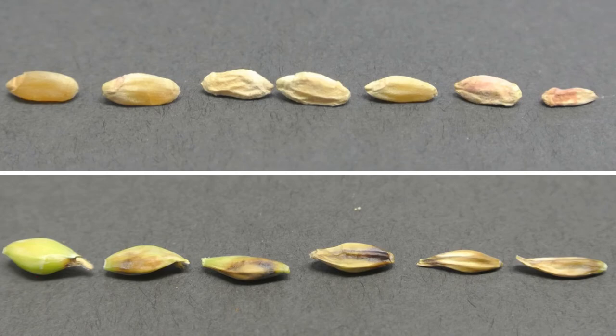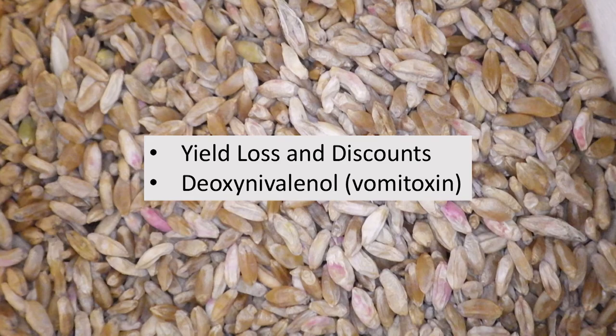In the top photo here, we have durum characterized by infection from least severe to most severe, and barley on the bottom. You'll notice that as the infection becomes severe — in this case, an earlier infection on the head — you'll have reduced kernel size. This will lead to yield loss and discounts due to the production of vomitoxin, known as deoxynivalenol, which is a product of the Fusarium fungus.